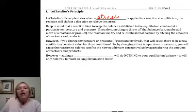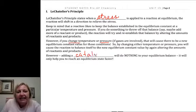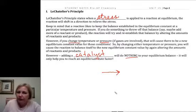We're going to change temperature, look at pressure, and look at concentrations. But bear in mind that adding a catalyst, and this is often kind of a trick question, will do nothing to your equilibrium balance. A catalyst will increase the forward rate and also increase the reverse rate.